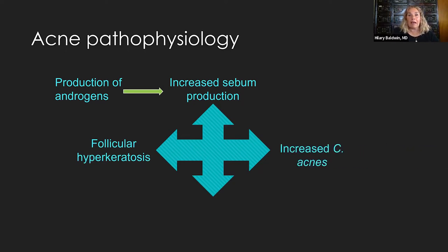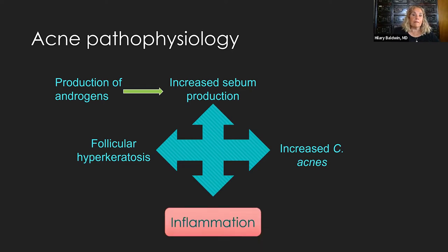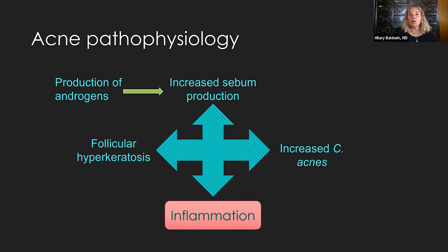The third pathophysiologic aspect of acne is an increase in C. acnes, which occurs at about the same time as the increase in sebum production, because sebum is the food source for C. acnes. It makes sense that the two of them go up simultaneously. Prior to puberty, there's basically no sebum and basically no C. acnes. And all roads lead to inflammation — all three of these pathophysiologic aspects causing the inflammatory response that we now know is acne.